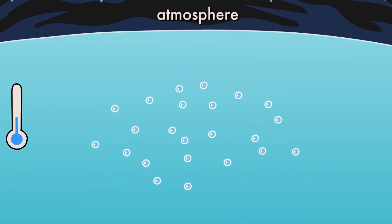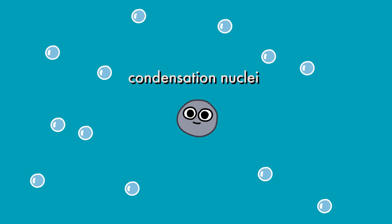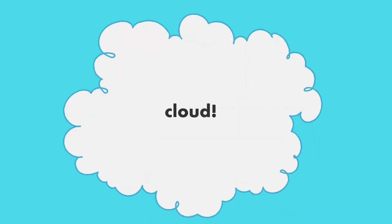The condensation process is easier when the droplets have a particle to condense upon. Oh, hey there. These particles, like dust or pollen, are called condensation nuclei. When enough water vapor condenses upon many condensation nuclei, that forms a cloud.